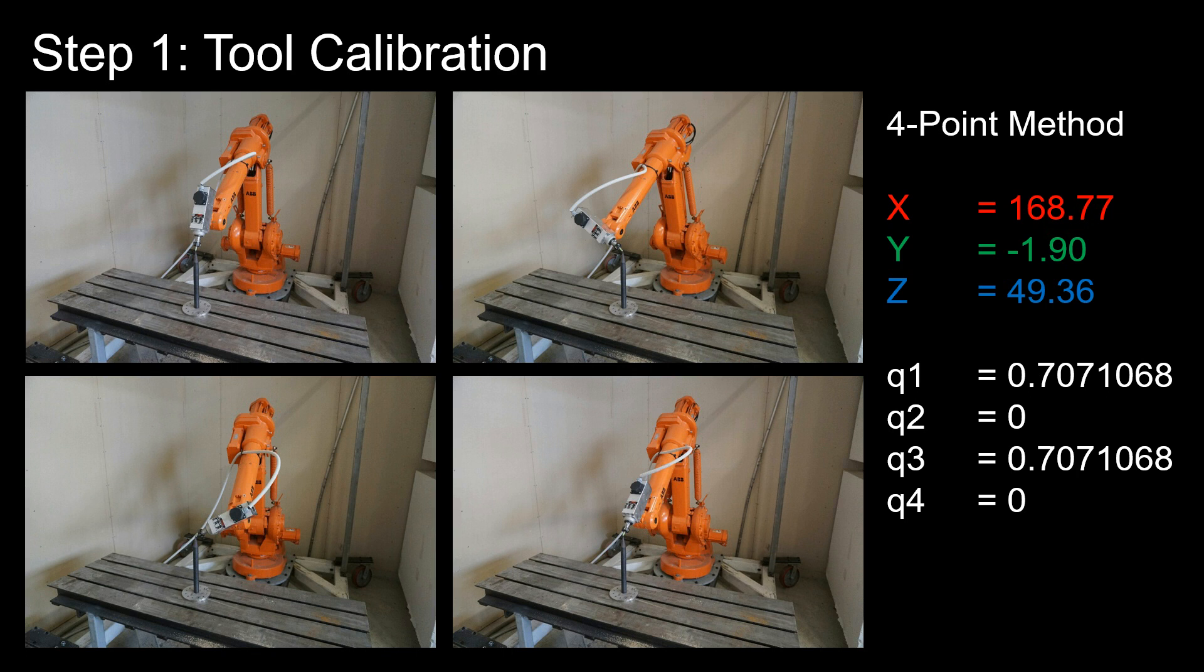It should also be said that to do this, it's actually enough with three points. So having a four-point method, we have an extra measurement. And that extra measurement can be used by the controller to give an accuracy of your calibration. So typically, you should aim for an accuracy result of 0.3 mm or better.